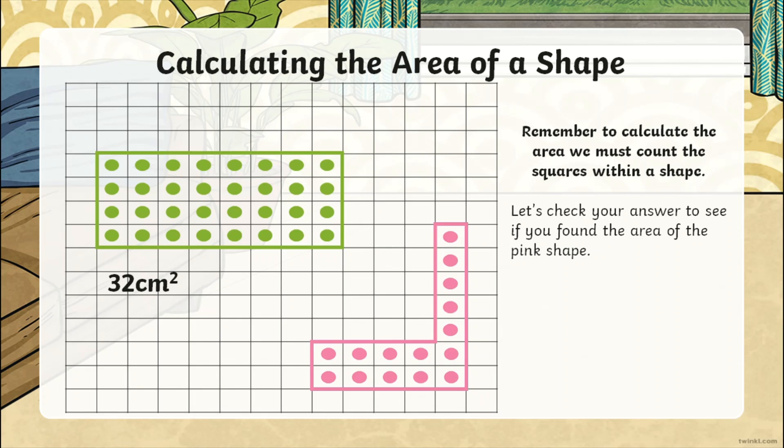By counting all of the squares within this shape, we know the area of this shape is 15 centimetres squared. Finding area by counting the number of squares is a really important step for children in becoming confident finding the area of shapes, because it teaches them to visualise exactly what they are calculating when they calculate area.